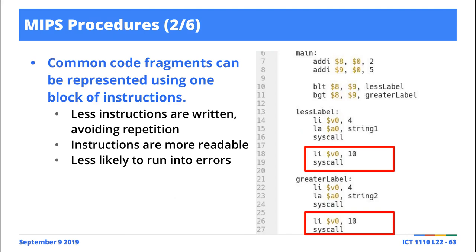The question is, why would you want to bother doing this? The obvious answer is you get to avoid repetition. You write something once and then refer to it. And once you do this, it becomes a lot easier to avoid errors, because if there's an error associated with that particular code fragment, you only have to fix one location within your program. Plus it makes your program more readable as well.